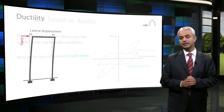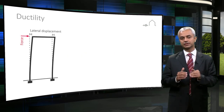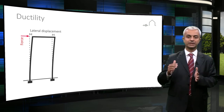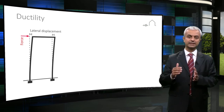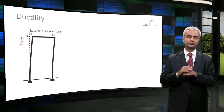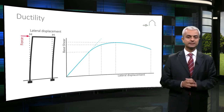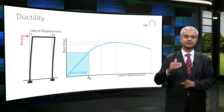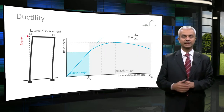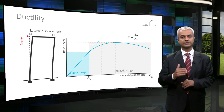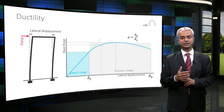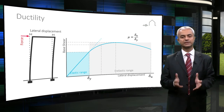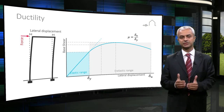Ductility defines the ability of a structure to sustain large deformations with a high proportion of initial strength, and the capacity to absorb energy without failure. It is calculated as the ratio of ultimate displacement to yield displacement, as shown in the graph. The graph shows the force-deformation relationship of a structure or a structural member. The area below the curve represents the amount of dissipated energy in the structure.